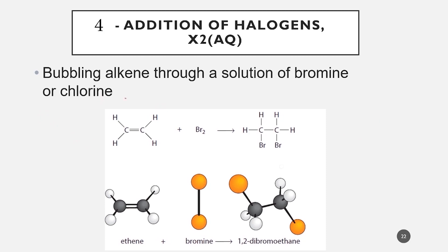Moving to the addition of halogens: when the double bond breaks, one halogen atom is added to each carbon atom of the double bond. Starting with ethene, the product would be 1,2-dibromoethane.